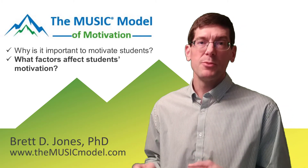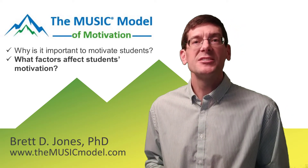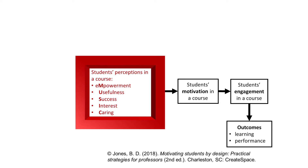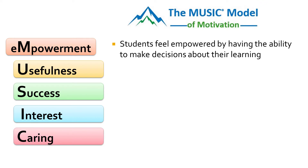Now let's answer the second question: what factors affect students' motivation? Understanding this will allow us to design instruction that motivates students. Researchers have found that five factors affect students' motivation in a course: their perceptions of empowerment, usefulness, success, interest, and caring. We can remember these five key perceptions with the acronym MUSIC.